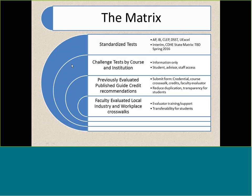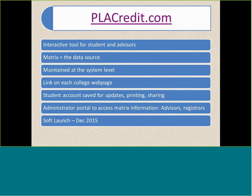The matrix will have all of those things — standardized tests, challenge tests by course and institution, and published guides. For challenge tests, the matrix will just have information so a person could look and say, I know Red Rocks offers the Math 121 test, so I could go there for it. With standardized tests, we've significantly expanded the tests we accept and we're lined up with what's happening at the Department of Higher Education — so across the state we'll all be accepting the same tests at the same cut scores, which is a big deal. Students don't have to continuously be reassessed wherever they go. We're also asking schools to document what they do with published guides so we can get it into the matrix and save them from duplicating, while getting some transparency out there for students.